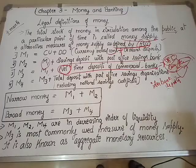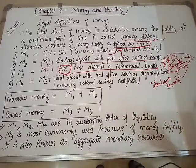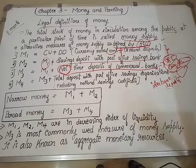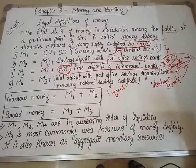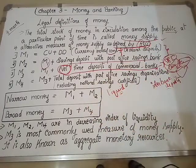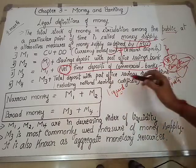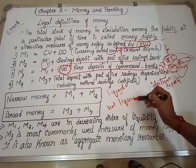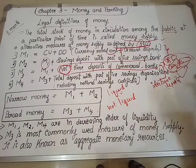There is another concept: narrow money and broad money. Narrow money is basically in the most liquid form — M1 and M2 come under narrow money. Broad money includes M3 and M4, which are not as liquid. So narrow money = M1 + M2, and broad money = M3 + M4.